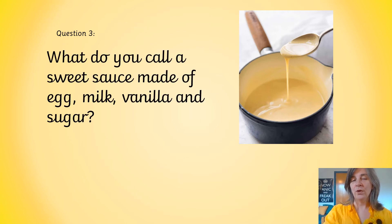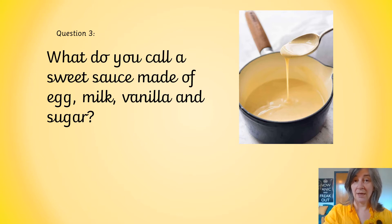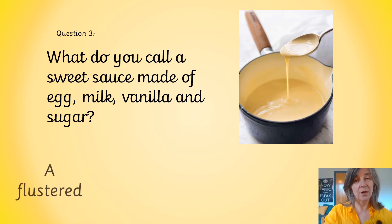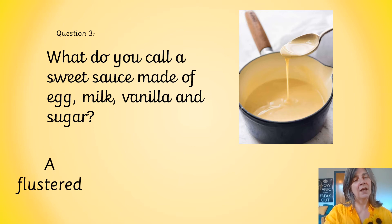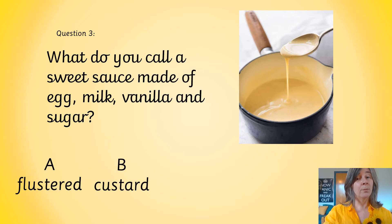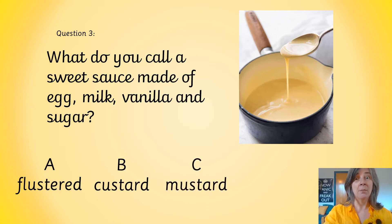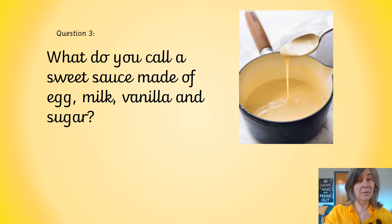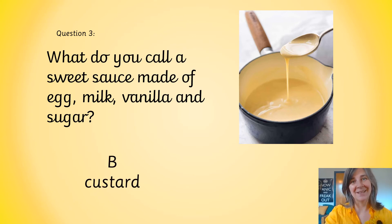Question 3. What do you call a sweet sauce made of egg, milk, vanilla and sugar? Is it a, flustered? B, custard? Or c, mustard? It's b, custard.